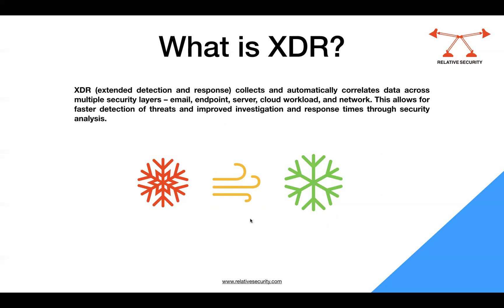We can summarize SIEM with two functions: it analyzes logs and creates alerts, and it stores logs for long-term compliance. SOAR is connected to different technologies and is more focused on responding to alerts. XDR, on the other hand, collects logs from the entire environment and is both detecting and responding to attacks by itself. It expands on EDR capabilities, and also addresses the network domain and cross-domain — protecting the organization's entire digital environment including network, cloud storage, applications, and endpoints.